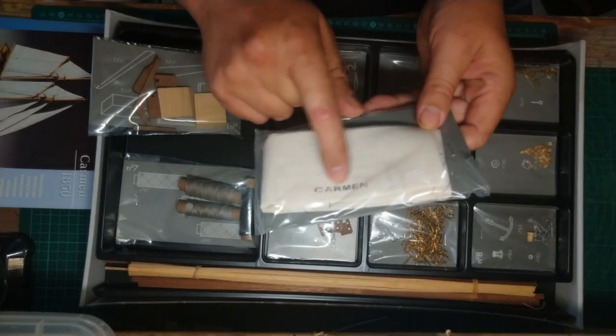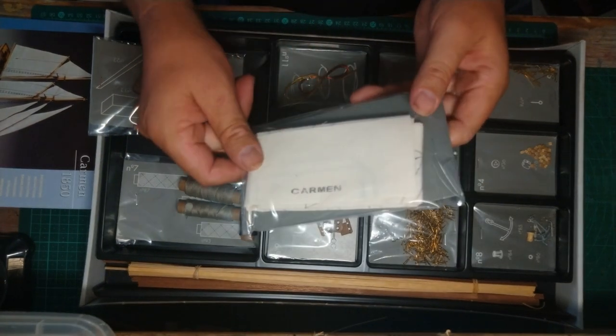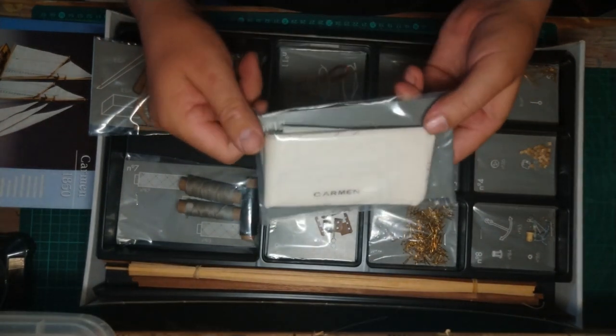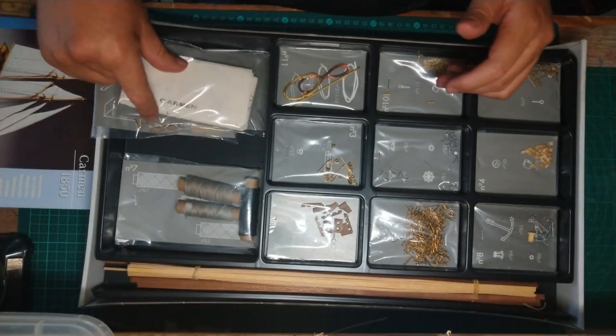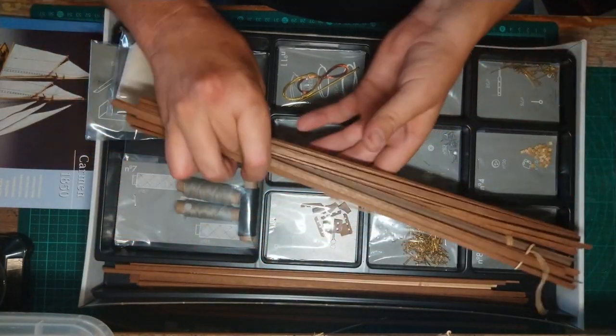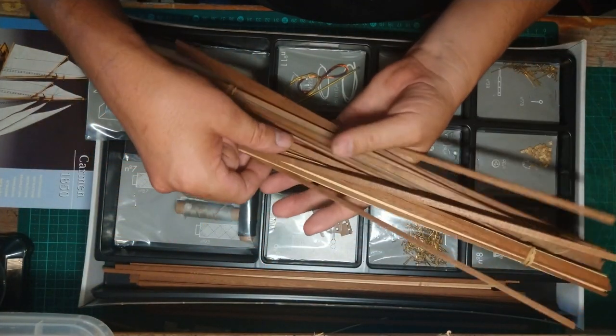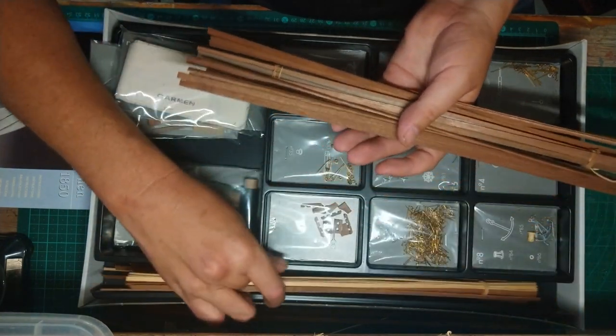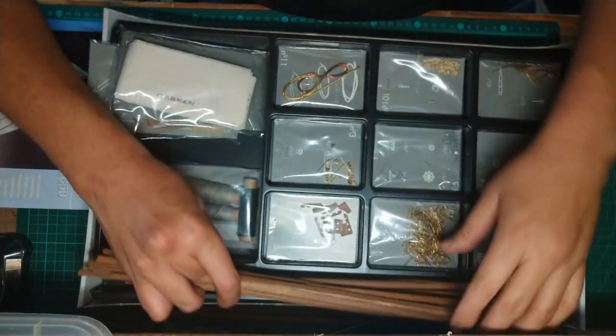In number one, we've got another couple of blocks here. And then in number 12, we've got the actual sail. You can see it says here 'Carmen'. I don't know if we need to maybe cut this out. I think we'll have to, but it's actual material, so that's quite nice. Then we've got the side paneling and the deck paneling.